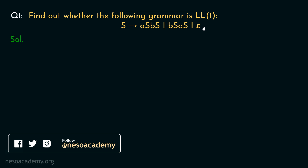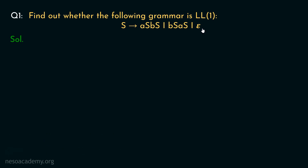Now we know, in order to find out whether a given grammar is LL1 or not, we need to construct the LL1 parsing table. And before we construct the LL1 parsing table for a particular grammar, we need to find out the first and follow of the non-terminals involved. In this grammar we only have the non-terminal S, so let's find out the first of S.